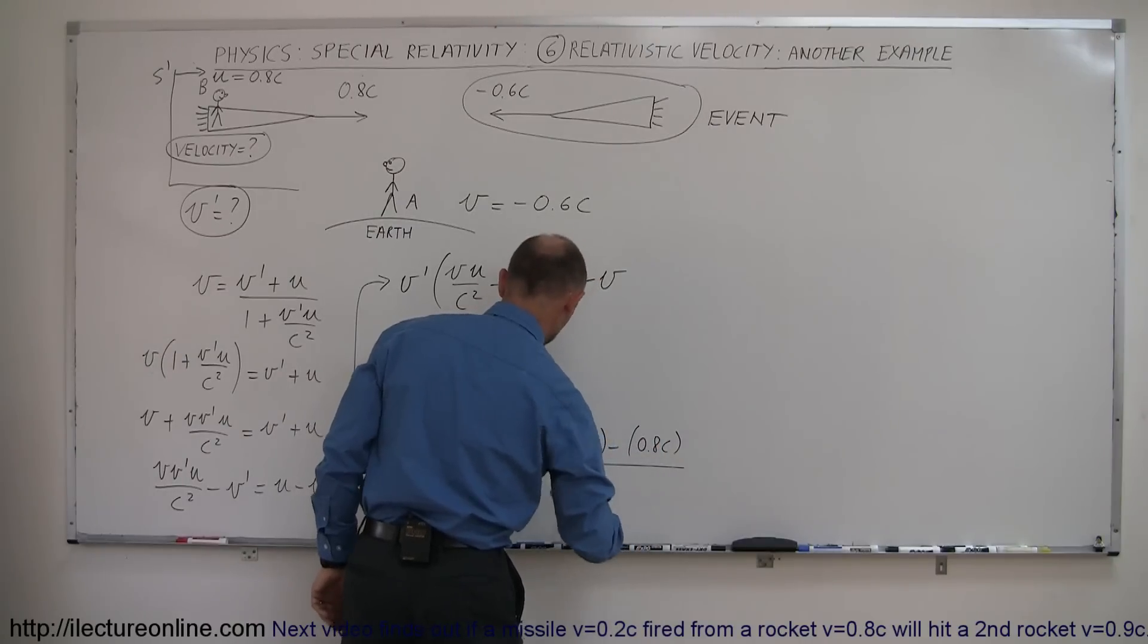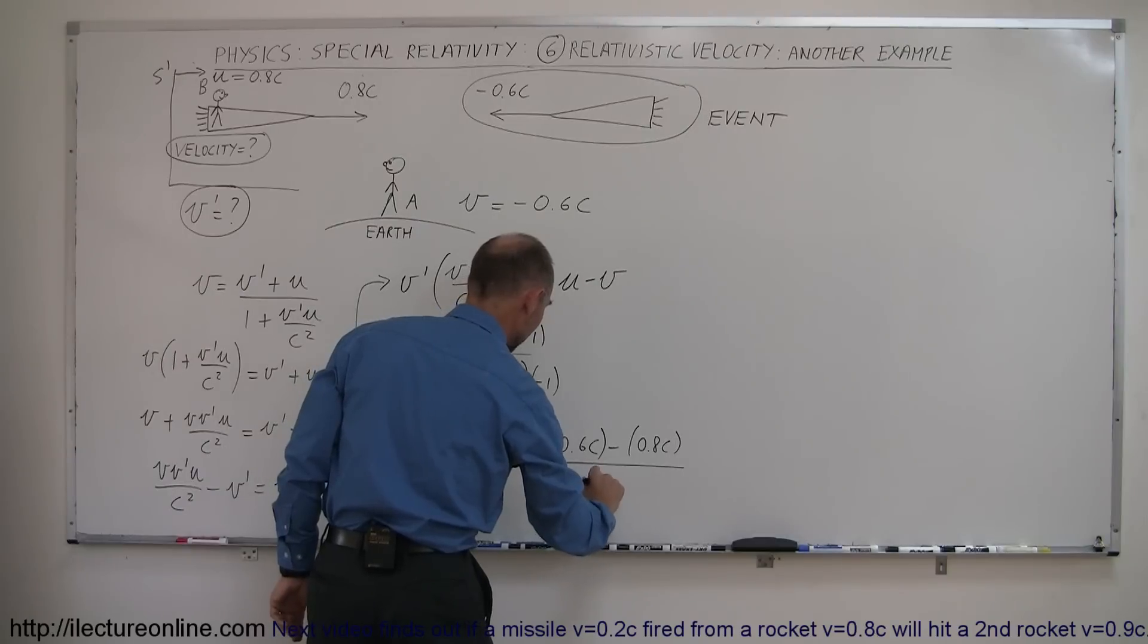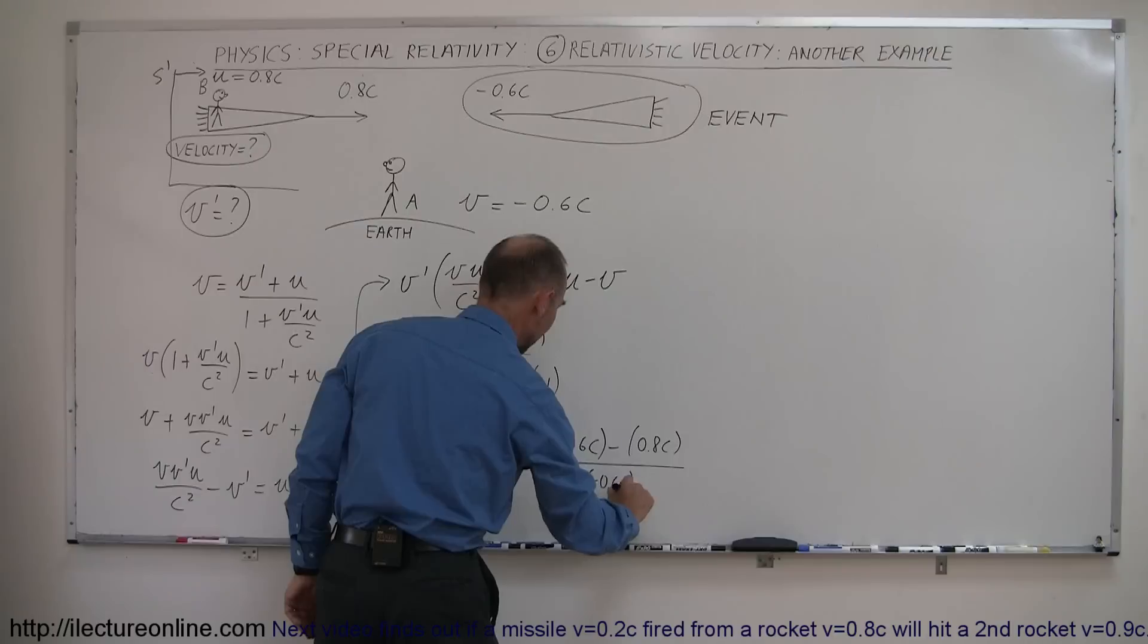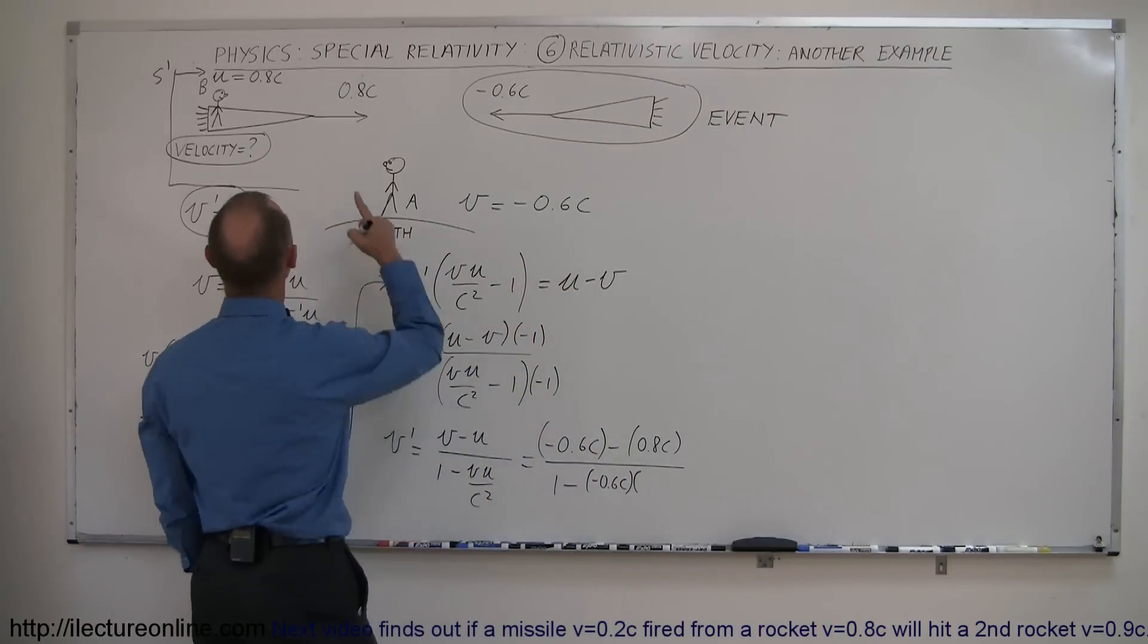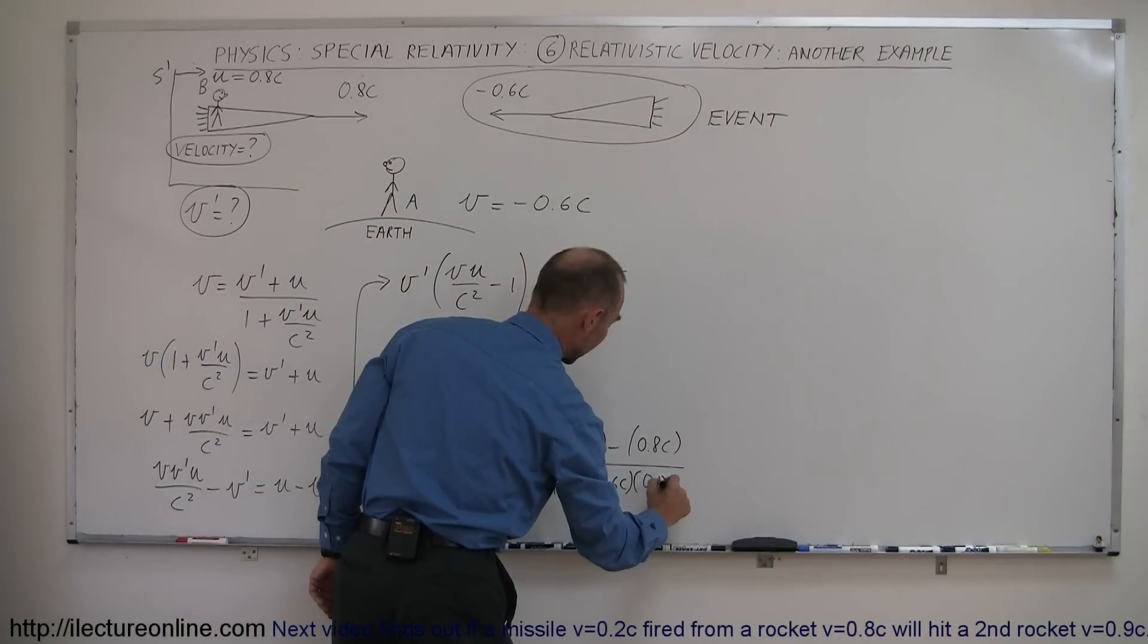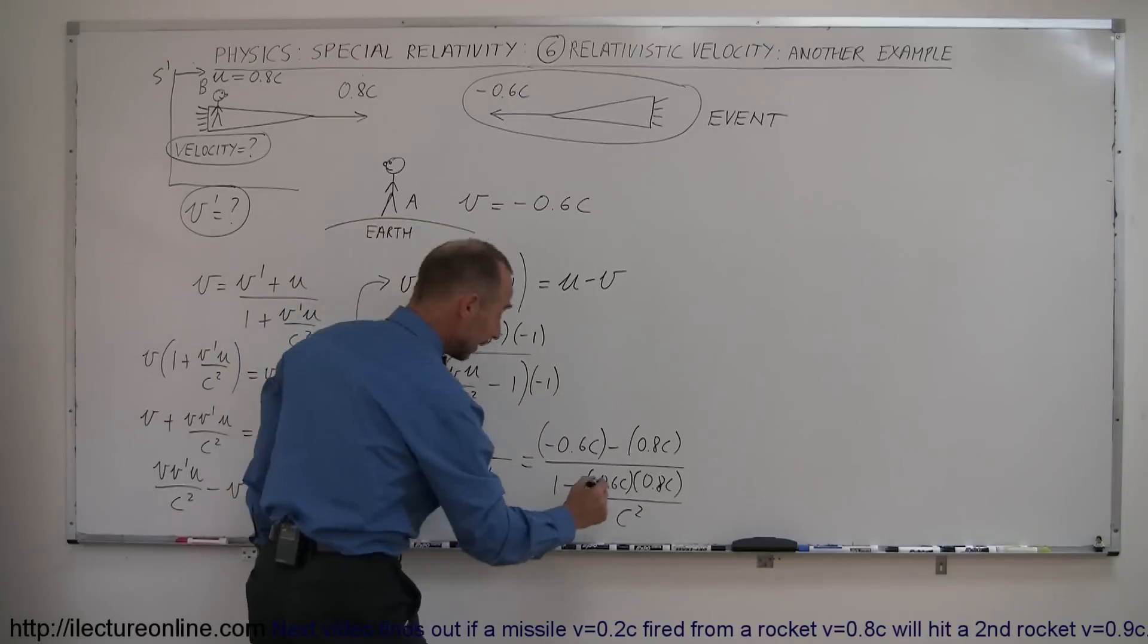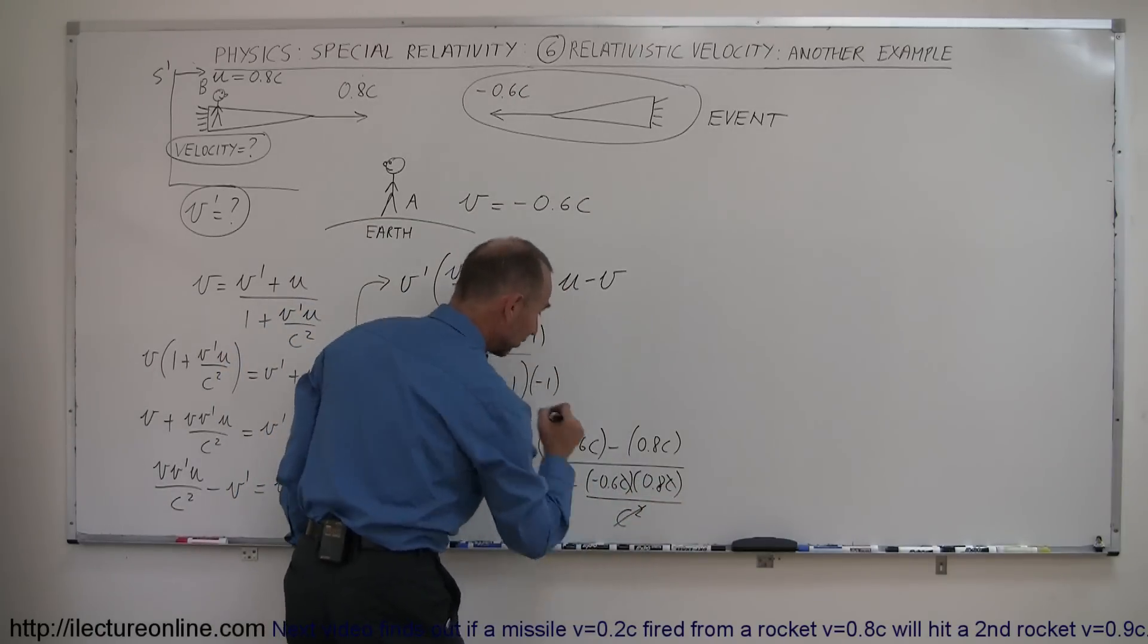And divide that by 1 minus V. V again is negative 0.6c. Multiply that times U, and U is a positive 0.8c. And the whole thing divided by C squared. And right away you can see that these C's cancel out with the C squared right there.